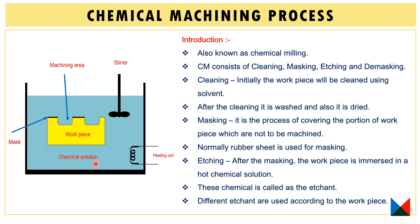In this container, the chemical solution is available and the workpiece will be immersed in it. To heat the chemical solution, there is a heating coil — power supply is given to this heating coil. When switched on, the heating coil provides heat to the chemical solution, making it very hot. There is also a stirrer that distributes the heat to the solution evenly.